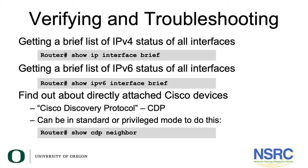You can find directly attached Cisco devices by using CDP, which is the Cisco Discovery Protocol. You need to be in standard or privileged mode to do this, and you can do so by typing the command 'show cdp neighbors'.